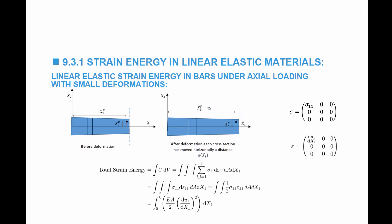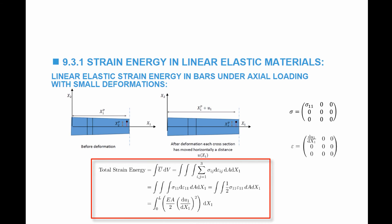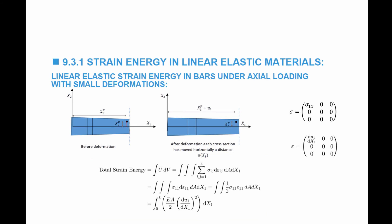The total strain energy stored in the bar equals the integration over the area and over the length of half σ₁₁ε₁₁ — the only non-zero components. Replacing σ₁₁ by EA·ε₁₁, the total strain energy equals EA over 2 multiplied by (du₁/dx₁)², integrated over dx₁, since integration over the area yields the constant area A.